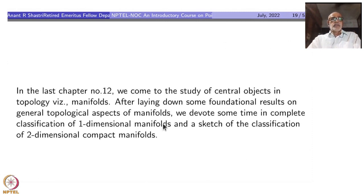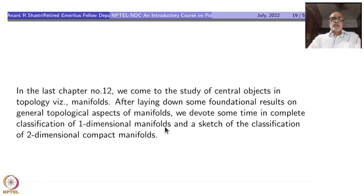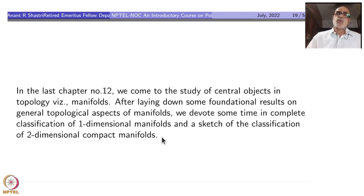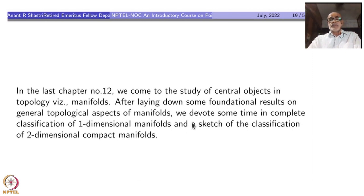In the last chapter, number 12, we come to the study of central objects in topology, namely manifolds. After laying down foundational results on the general topological aspects of manifolds, we devote some time to the complete classification of one-dimensional manifolds. The last part is a sketch of the classification of two-dimensional compact manifolds.